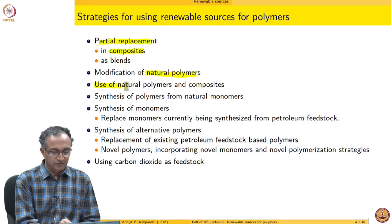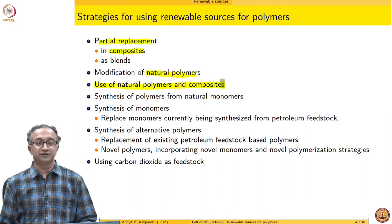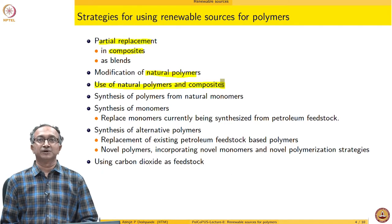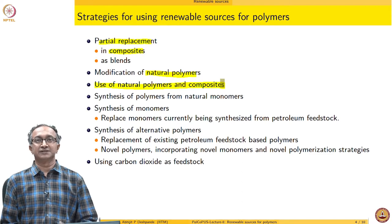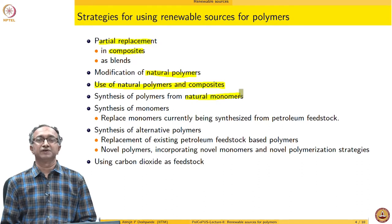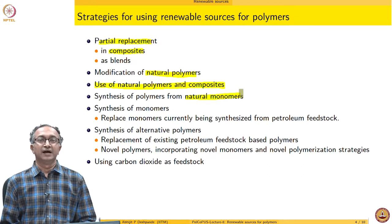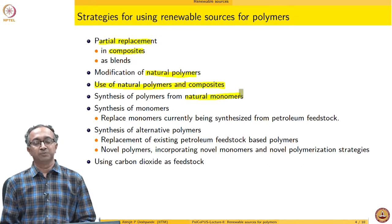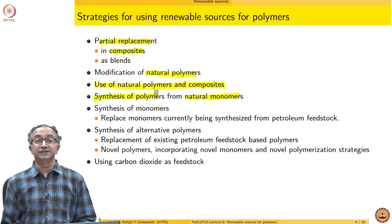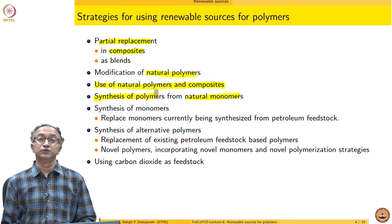Moving on, we could of course use natural polymers and composites themselves directly. Tree trunks, bamboo — there are so many such natural materials which are already used and can be used for certain applications. The other major strategy is to take monomers which are available from the natural world and then try to polymerize them, synthesizing useful polymers from these natural starting materials.